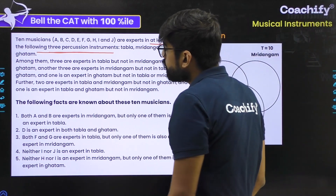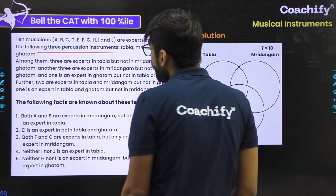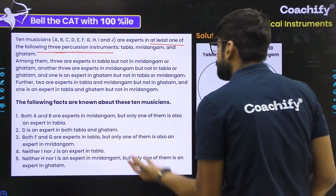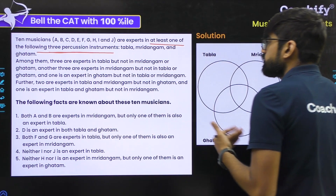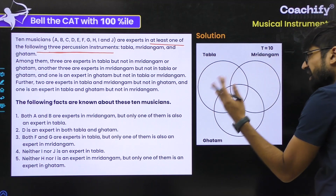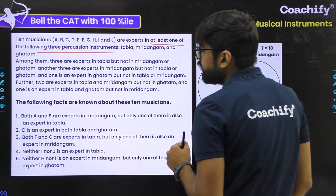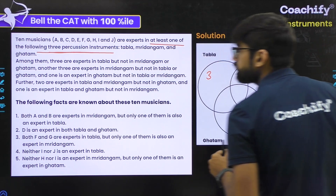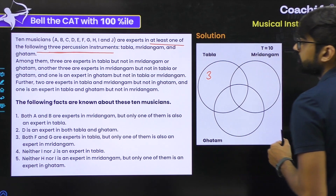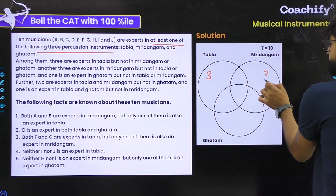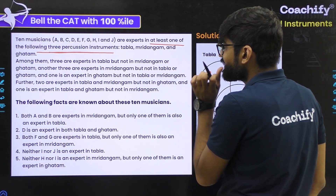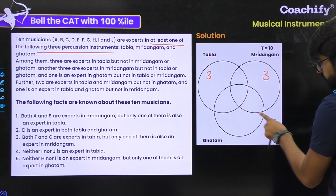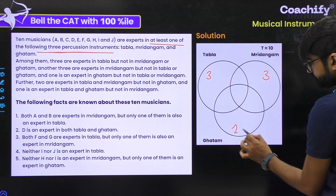T equals 10. It says that among them, three are experts in tabla but not in mridangam or ghatam — that means only tabla, so that region is 3. Another three are experts in mridangam but not in tabla or ghatam — exactly mridangam, so that is 3. One is an expert in ghatam but not in tabla or mridangam — only ghatam — so that region is 1.